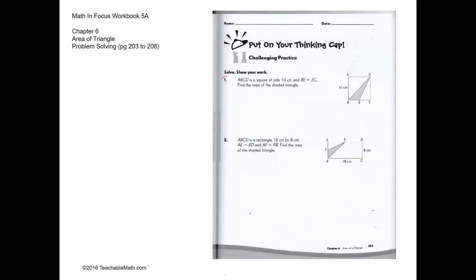Challenging practice question 1: ABCD is a square with sides of 10. BE equals EC, meaning this side is 5 centimeters and this side is also 5 centimeters.